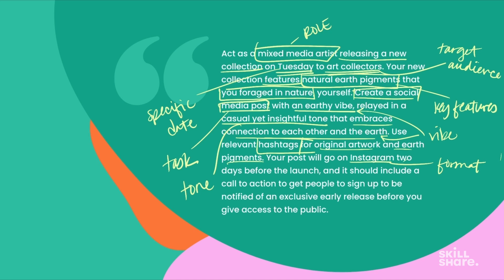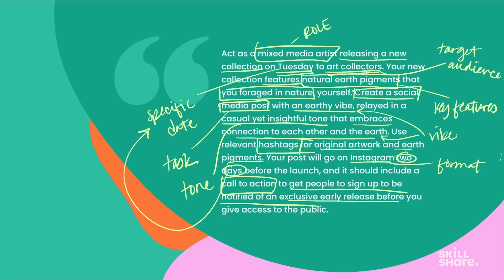Then I go on to say that the post will go on to Instagram — that's my format — two days before the launch. I've already listed that the launch is Tuesday. And it should include a call to action to get people to sign up to be notified of an exclusive early release before access is given to the public. That is giving a very specific objective and detail for this post. So let's plug this in and see what we get.